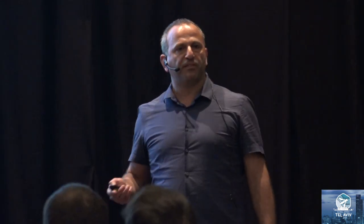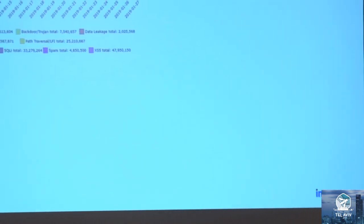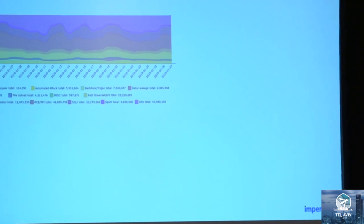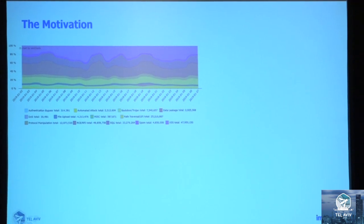I'll start with some motivation. Ori and I are from Imperva. Among other things, we are WAF providers. In the security research team, we are seeing a lot of malicious web traffic coming to our customers. It comes in different types of attacks. We see a significant amount of data, and all the time we're trying to improve our security models and attack models, understand better what attackers are trying to do and how attacks look like, and therefore provide better solutions.